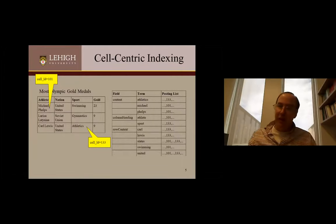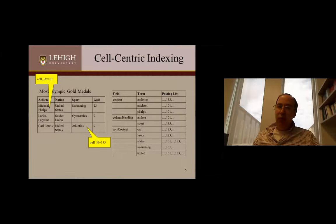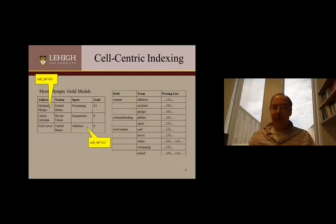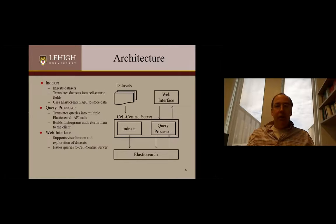We also have additional fields to provide contextual information. The column heading: cell 101 has 'athlete' as a token in its column heading; cell 133 has 'sport' as the token. One additional thing we add is the notion of row context — for each cell we also index what other values appear in the same row. So for cell 133, which has athletics, the context includes Carl and Lewis. For Michael Phelps, the context includes swimming. When you have a query like content 'Phelps' in the context of swimming, cell 101 will be a relevant cell.